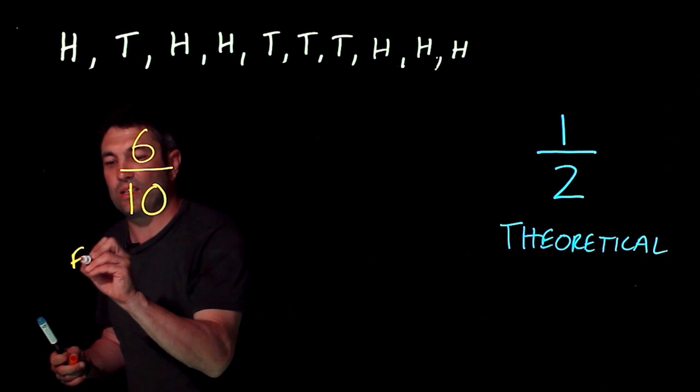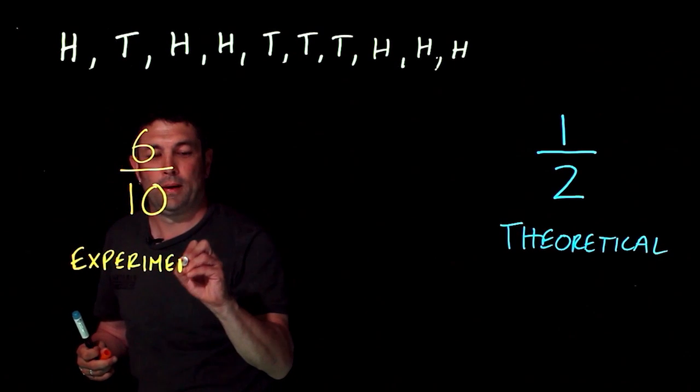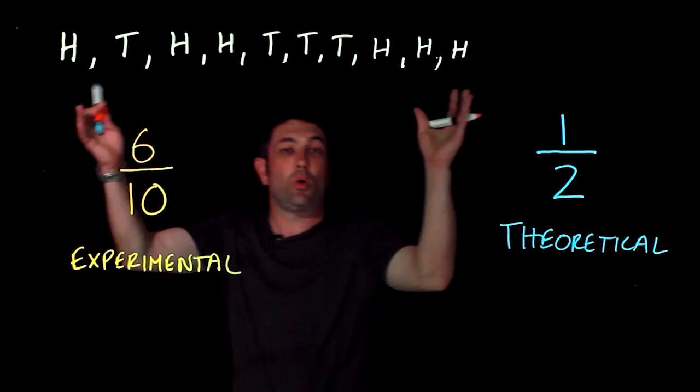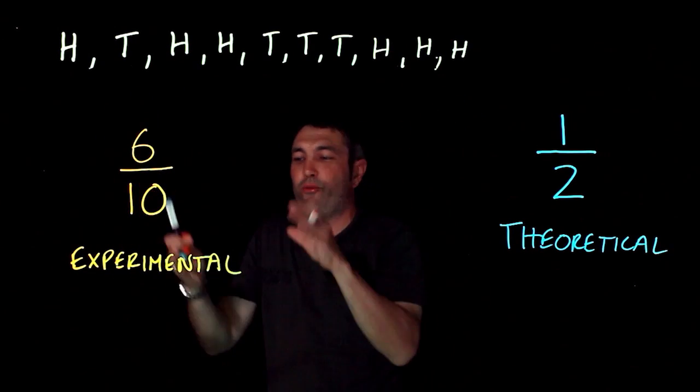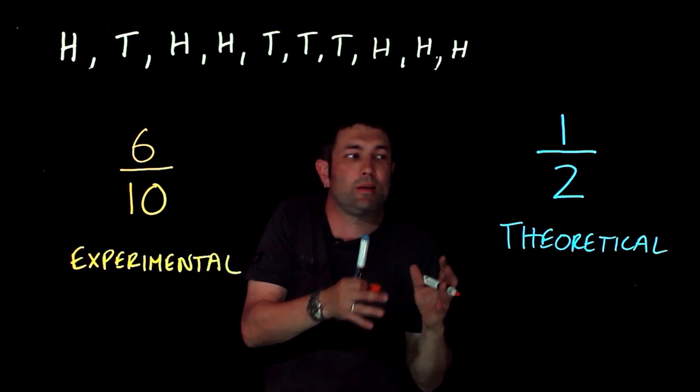And so this is experimental probability and that's where I look at what's happened before with that coin and then from those results I work out what's going to happen next.